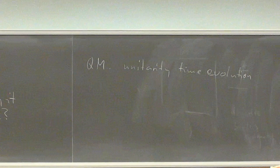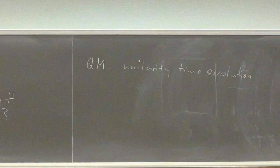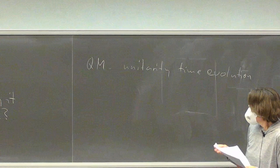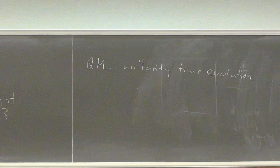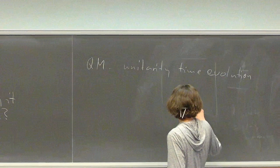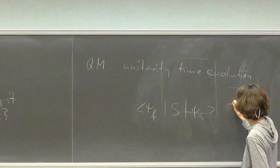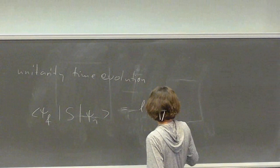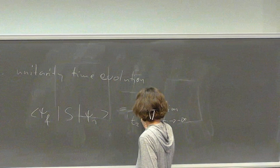In plain language: if you have some quantum state that evolves with time, you can't lose anything and you can't gain anything. If you count up where your probability is at the end, you always end up with a probability of one. This leads us to the S matrix, which brings us from some initial state to some final state, written in terms of unitary operators by taking limits as T1 goes to minus infinity and T2 goes to infinity.